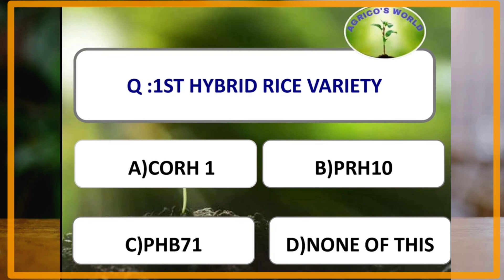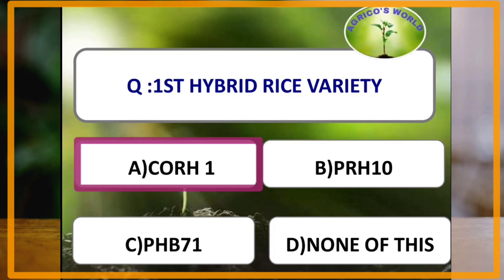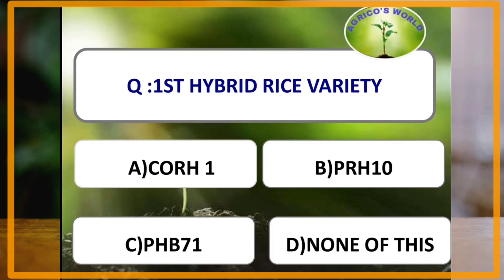The first hybrid rice variety is CORH-1. PRH-10 is the first hybrid basmati rice variety. PHP-71 is the first hybrid rice variety developed in the private sector.